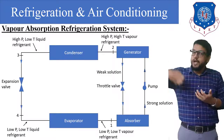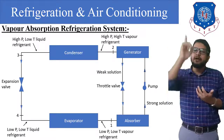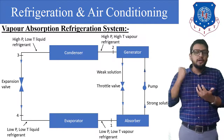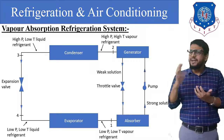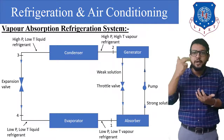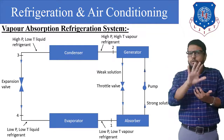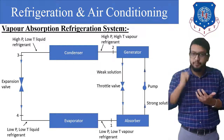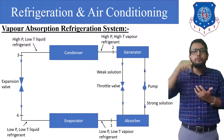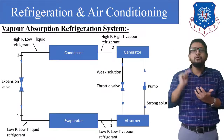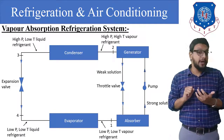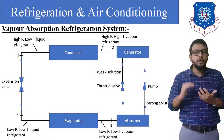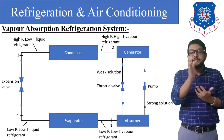The pump increases the pressure and supplies the strong solution to the generator. Once inside the generator, heat energy is supplied, solubility reduces, and almost 88% of the ammonia gets separated. The remaining solution — with only about 10–12% ammonia — is now a weak solution. That weak solution falls back into the absorber, but first its pressure must be reduced by the throttle valve before it re-enters the absorber.